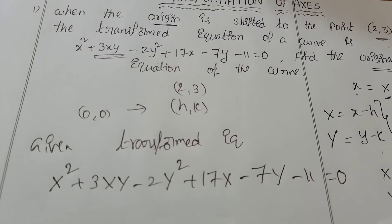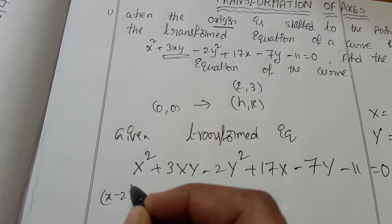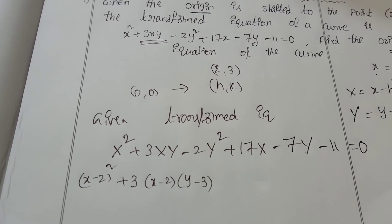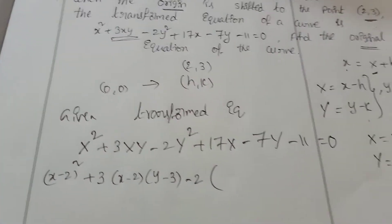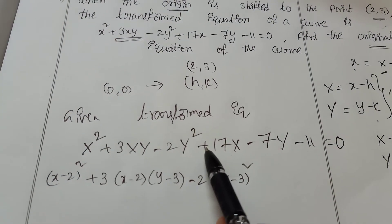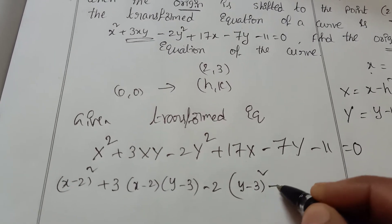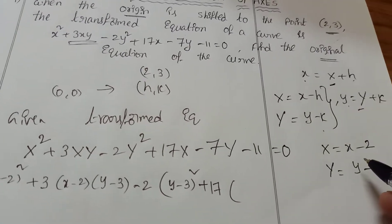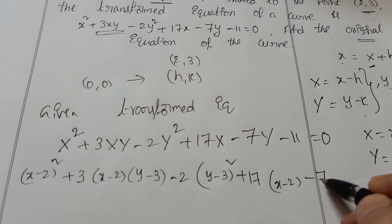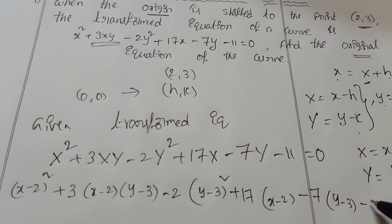Substituting: we write (x minus 2) whole square, plus 3 times (x minus 2)(y minus 3), minus 2 times (y minus 3) whole square, plus 17 times (x minus 2), minus 7 times (y minus 3), minus 11, equal to 0.